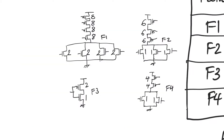Let's consider this example. In this example we have four combinational blocks. Let's assume that each of these four blocks lies between two registers and thus forms a path. So if we want to find the critical path, we will find the worst case delay for any of these four combinational logic blocks.